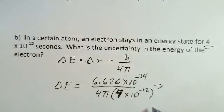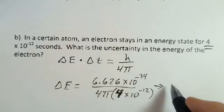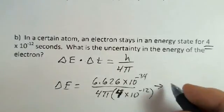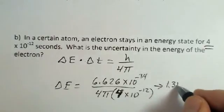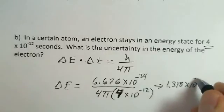Work this out in your calculator in case I make another error of my mathematics on my calculator. And I came up with 1.318 times 10 to the minus 23rd joules.